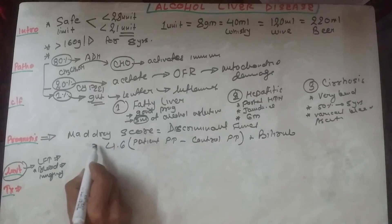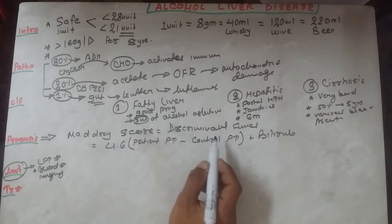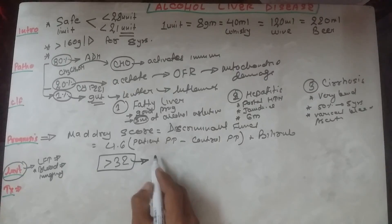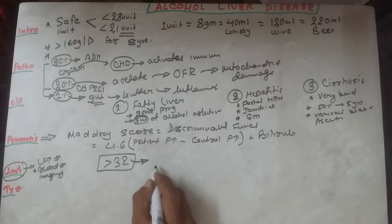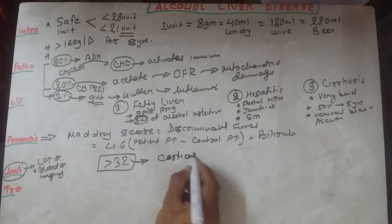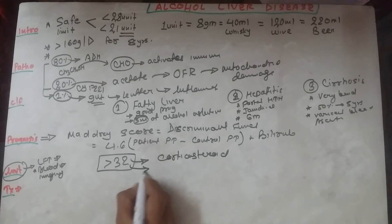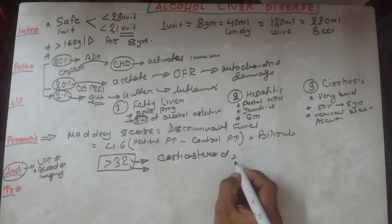If the Maddrey score is greater than 32, this has a very poor prognosis. It implies that there is severe liver disease present in this patient, and usually they need to undergo corticosteroid therapy or pentoxifylline can be given.